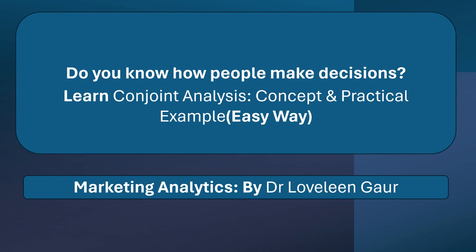We are taking a very important topic today: how people make decisions. Marketers nowadays need to understand how people are making decisions. For that, there is a statistical technique known as conjoint analysis, and we are going to cover the concept as well as a practical aspect using SPSS, discussing how we use conjoint analysis in a very easy way.